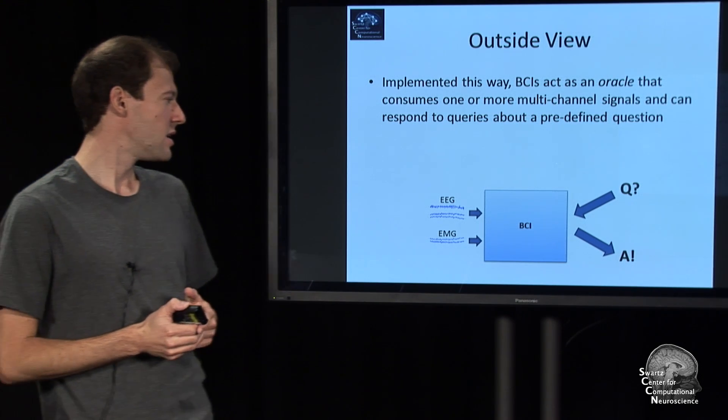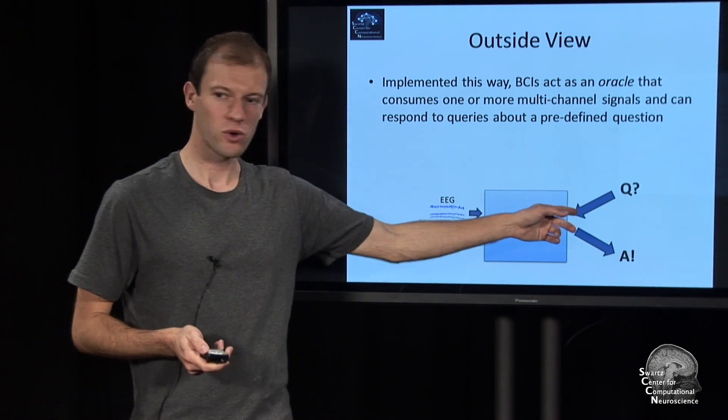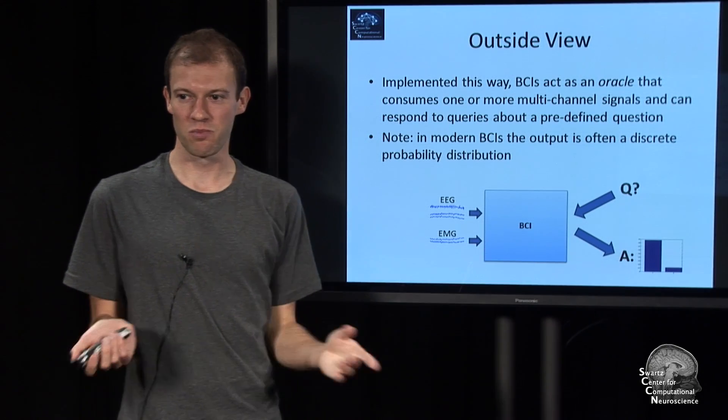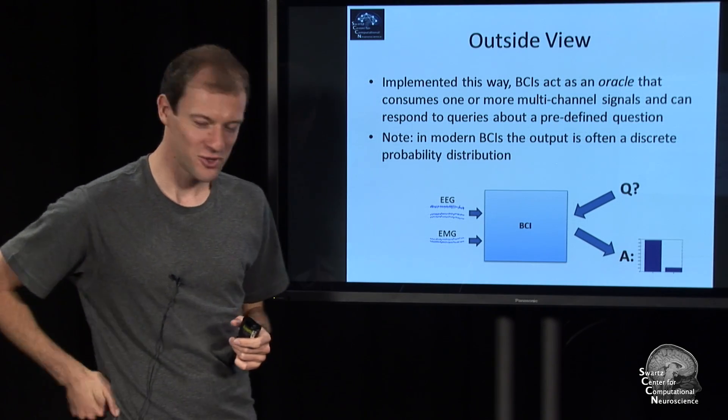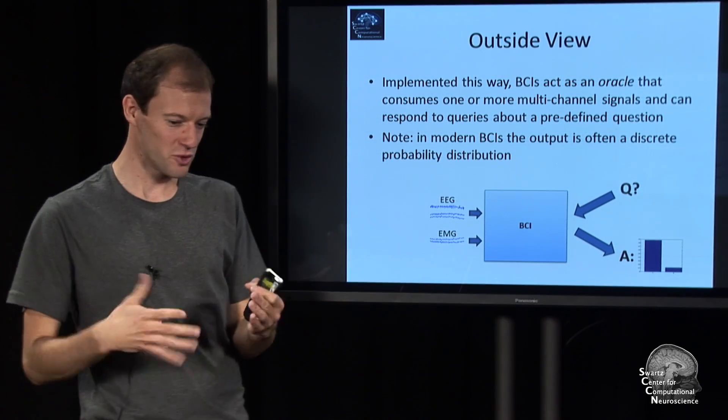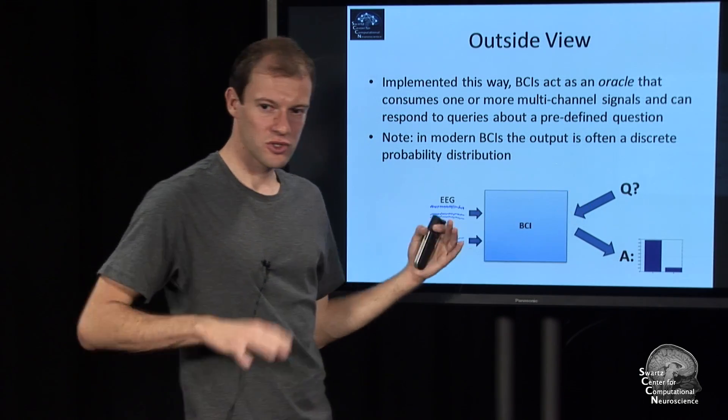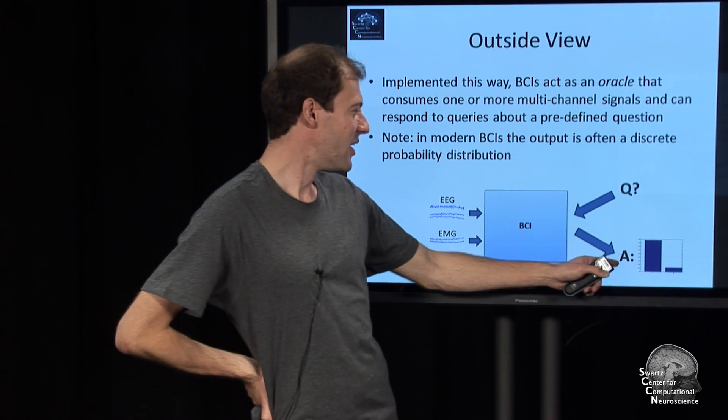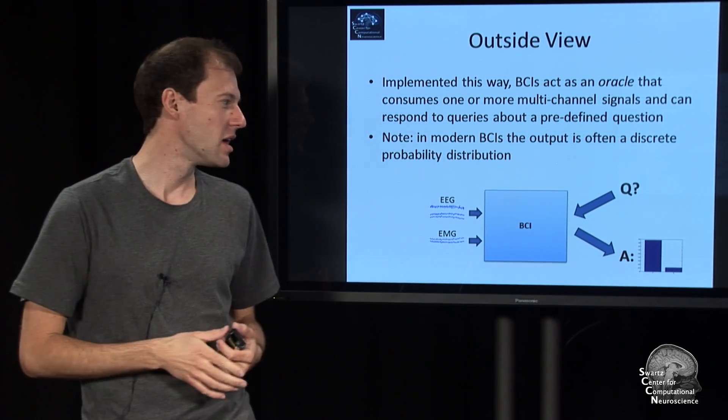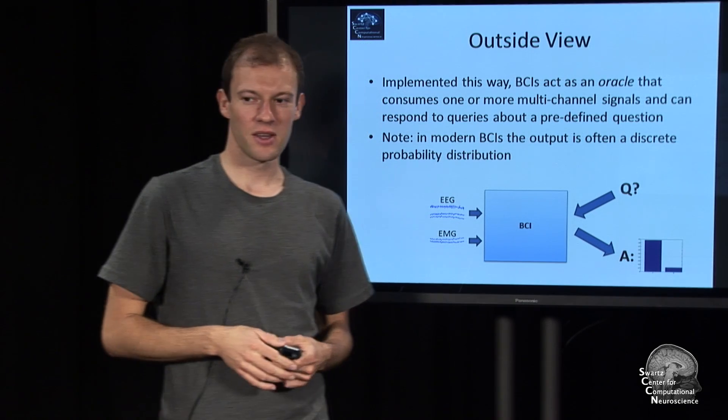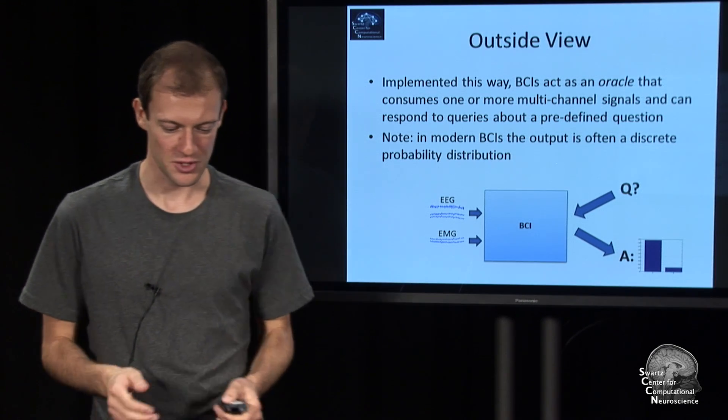When you view this kind of design from the outside, it acts like an oracle. You pipe some signal in, and at some time point you invoke the prediction function and ask what is the cognitive state at this time point? I'm always saying cognitive state in quotes because it's easy to confuse the estimate of the thing that the BCI produces with the real thing that happens in the brain. Usually what modern BCIs output is not a single number, like minus one or plus one, but rather the probability that a person is in this state and the probability that the person is in that state.